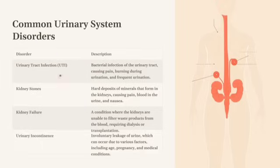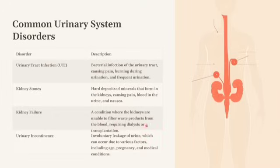Common disorders of the urinary system include: urinary tract infections, or UTI — a bacterial infection of the urinary tract causing pain, burning sensation, and frequent urination; kidney stones — hard deposits of minerals that form in the kidney, causing pain, blood in the urine, and sometimes nausea; and kidney failure — a condition where the kidneys are unable to filter waste products from the blood, requiring dialysis or transplantation.